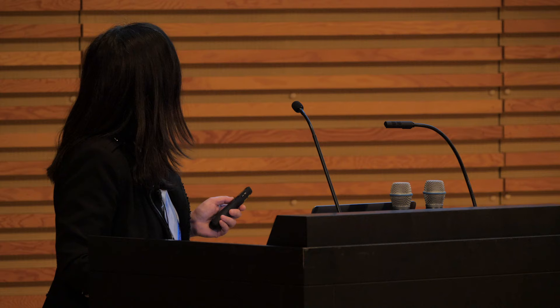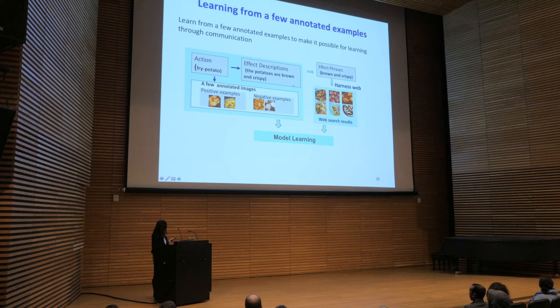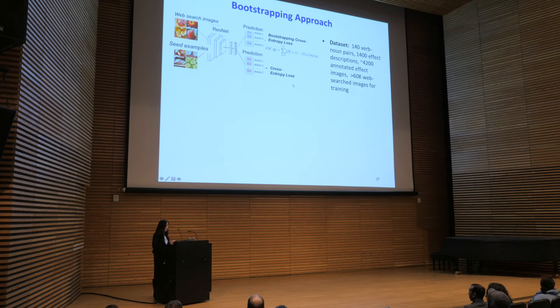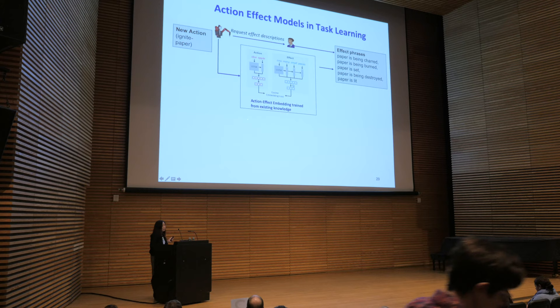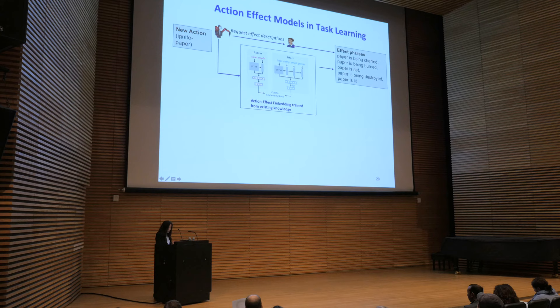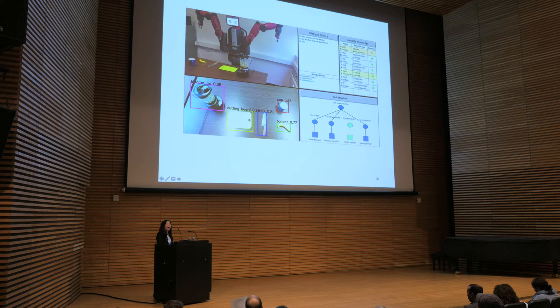We use web data to supplement the training data and a bootstrapping approach to handle noise. This is a really hard problem — the performance is poor and there is big room for improvement. Our goal is to incorporate this kind of model into interactive task learning. It's often the case that robots will encounter a new verb-noun pair in the field, and the robot can initiate communication to learn the new action — for example, asking for effect descriptions or generating effect descriptions from existing embedding space.